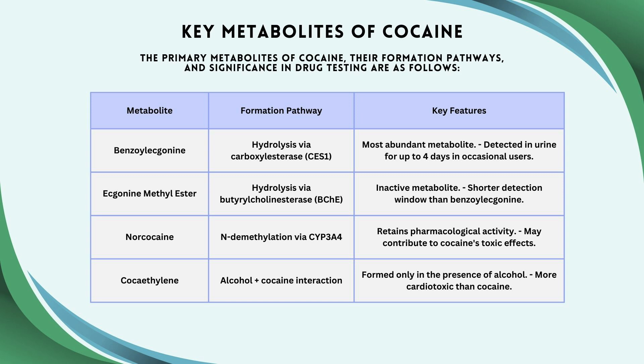Norcocaine is produced by N-demethylation via the cytochrome P450 system, in particular CYP3A4. Norcocaine retains pharmacological activity and may contribute to cocaine's toxic effects. Cocaethylene is formed via a transesterification reaction when cocaine and alcohol are co-ingested, and it is more cardiotoxic than cocaine. In terms of active metabolites, norcocaine and cocaethylene are particularly concerning.